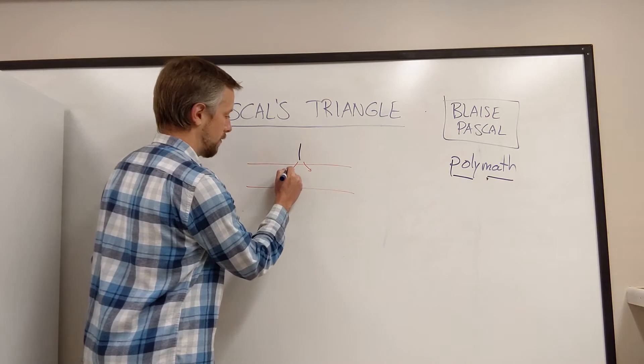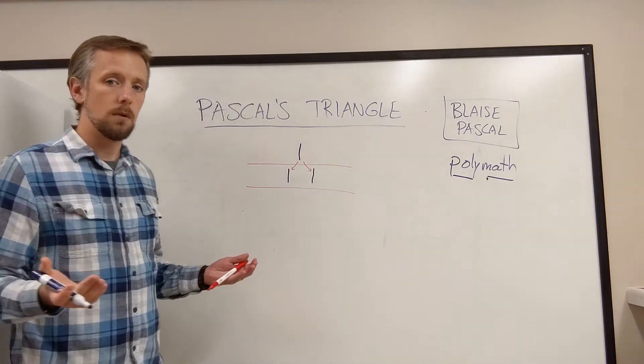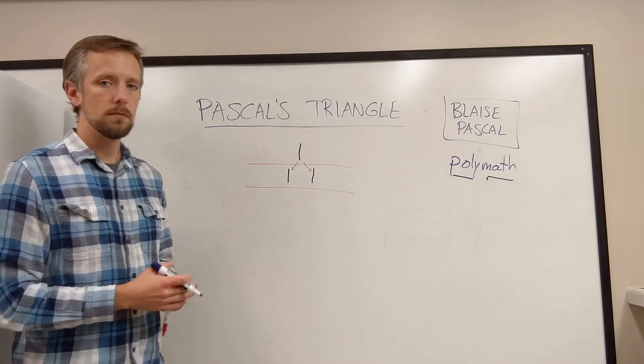And when we bring it down and to the left, we'll have a 1 here. And down and to the right, we'll have a 1 here. And that is the second row of Pascal's Triangle. Pretty simple.